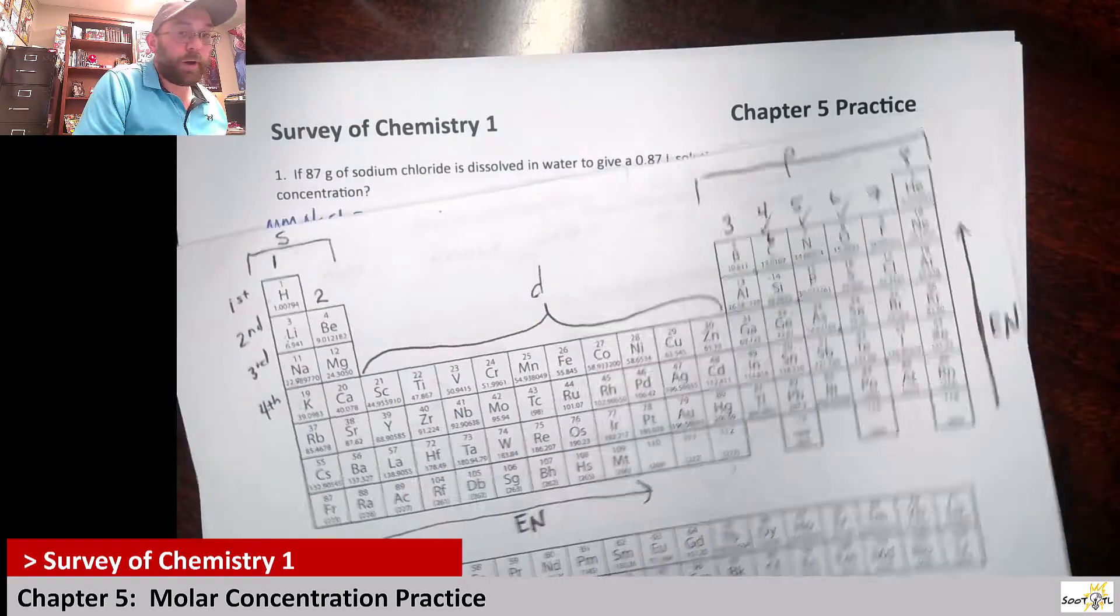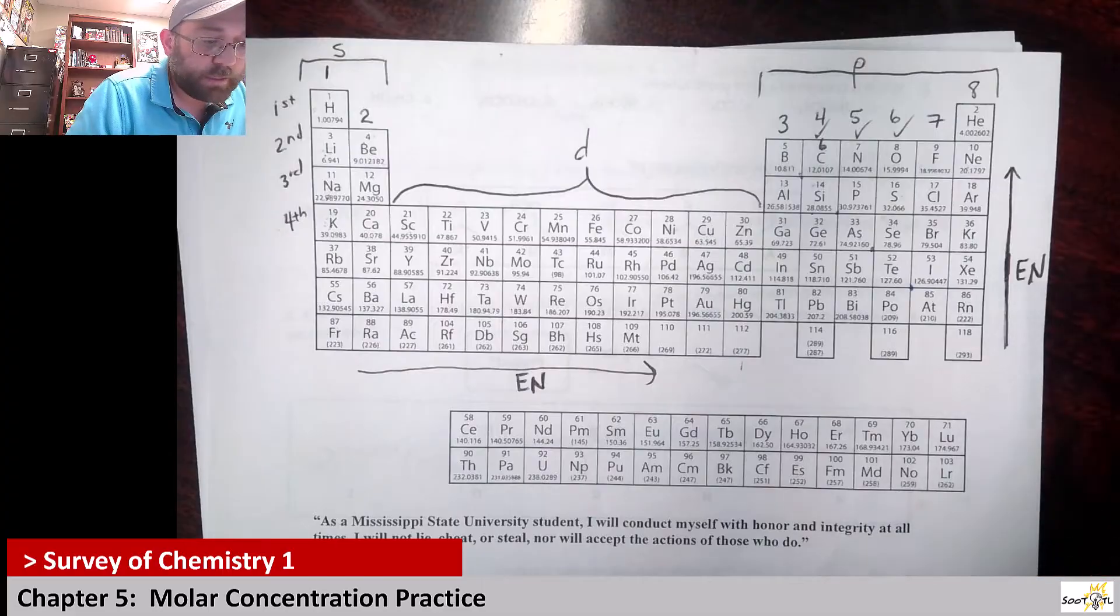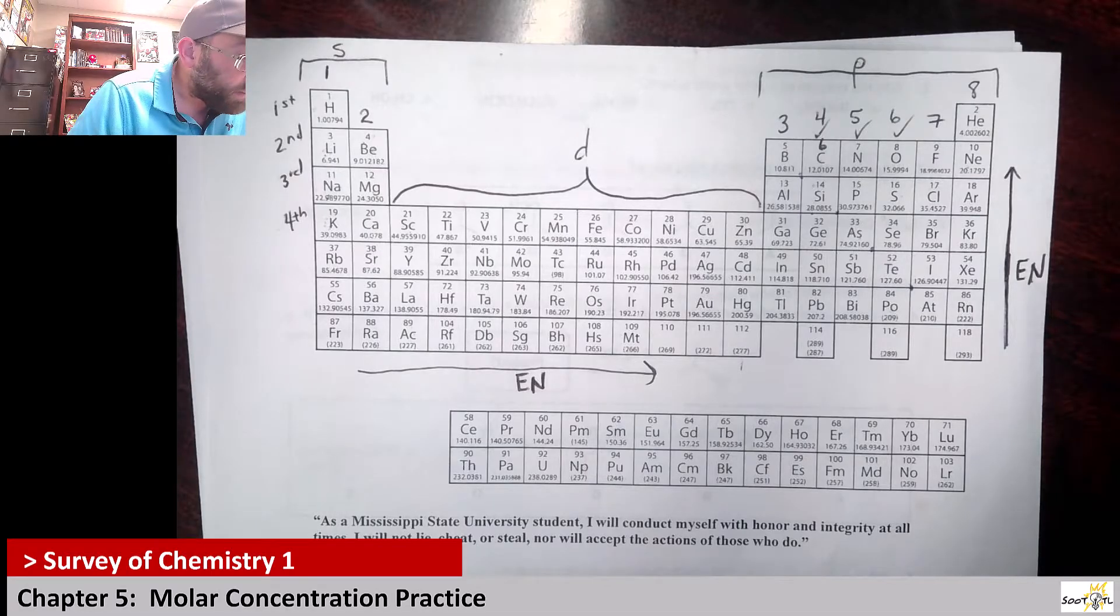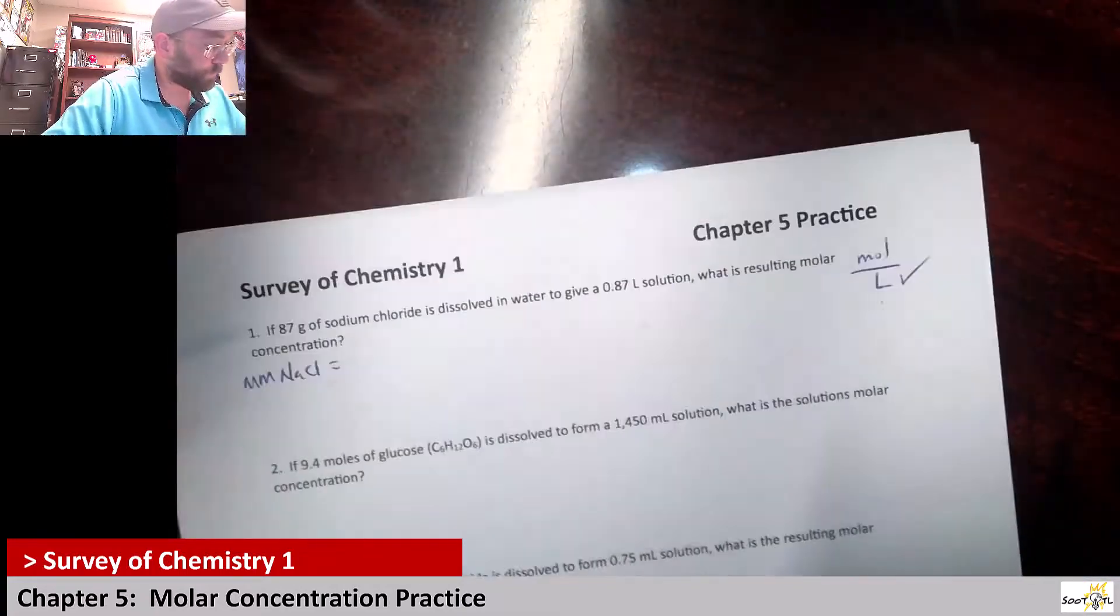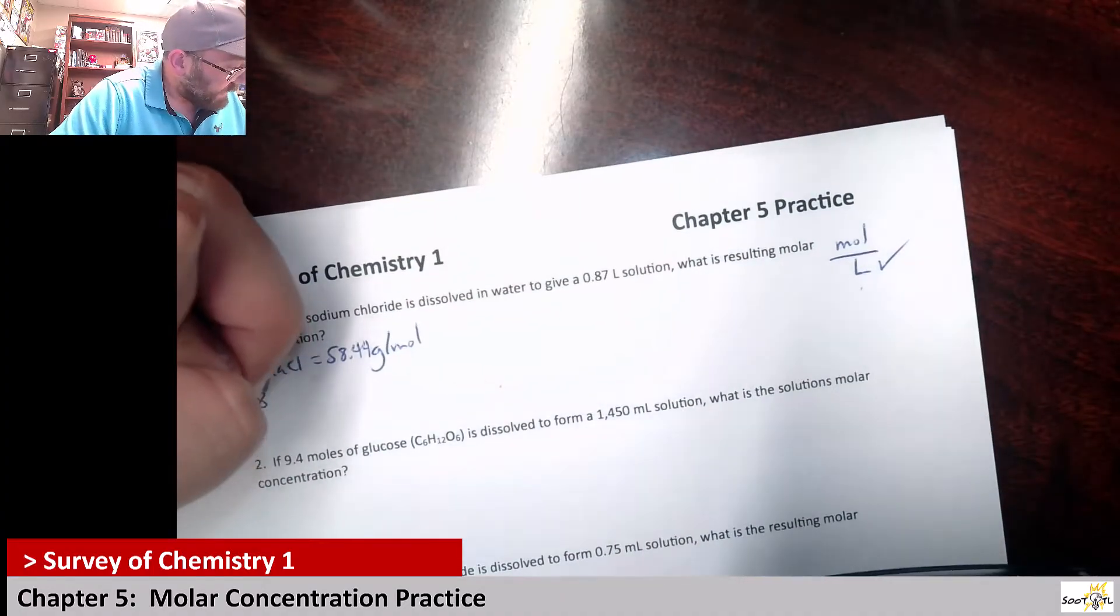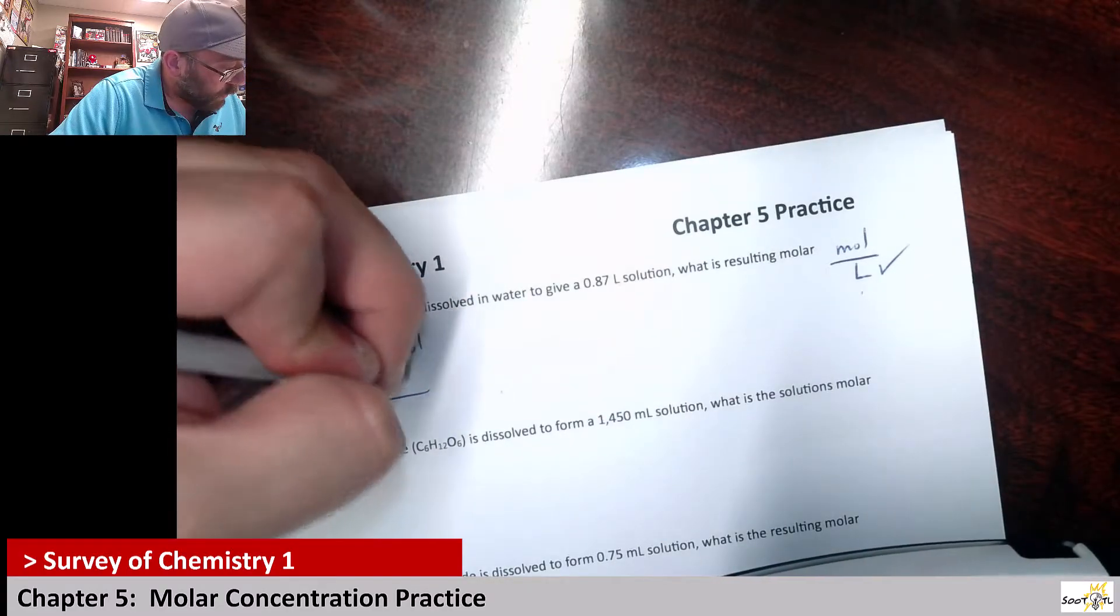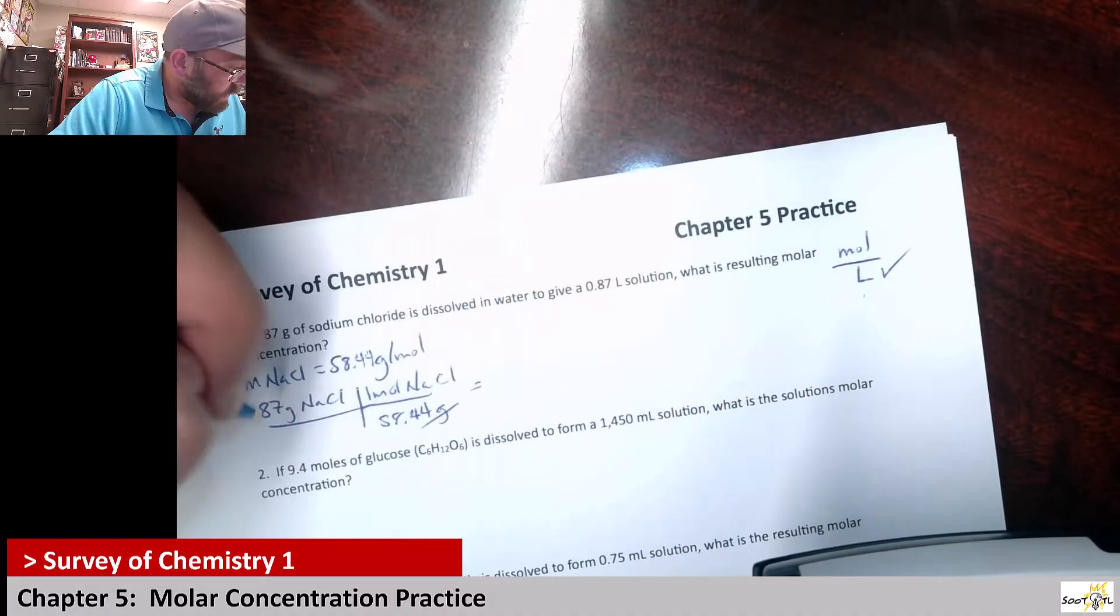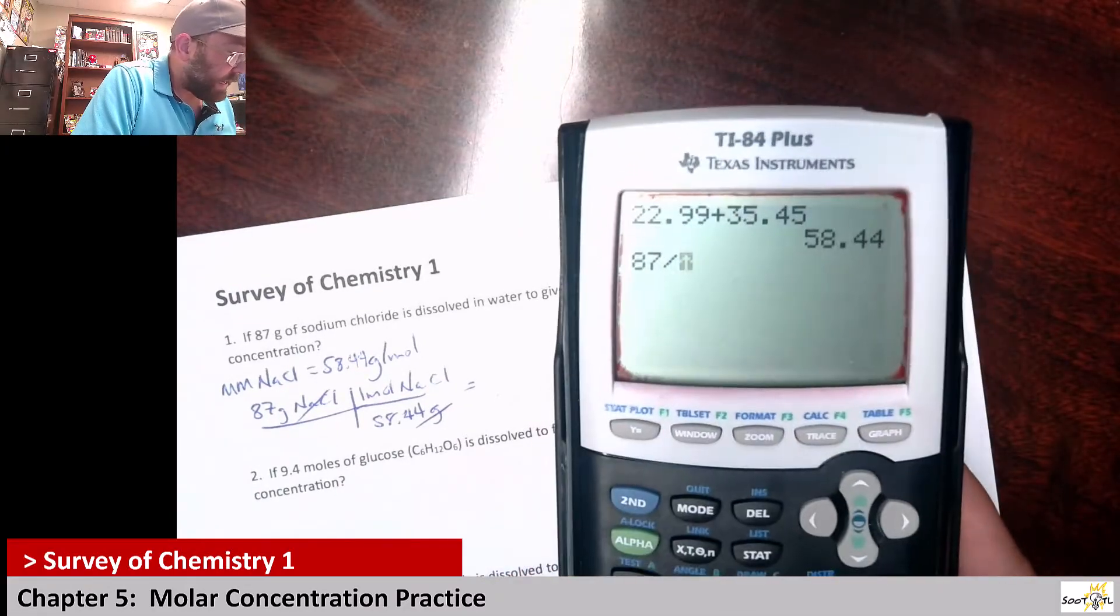Let's get our handy dandy periodic table. It's going to save our lives quite a few times. So sodium here is 22.99 and then chlorine is going to be 35.45. So when I add that up I get 58.44 grams per mole. If I take that 87 grams of sodium chloride, I can use that molar mass to convert it. Because I know one mole of sodium chloride is 58.44 grams.